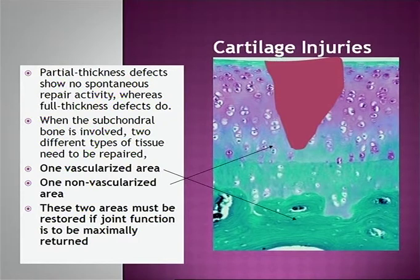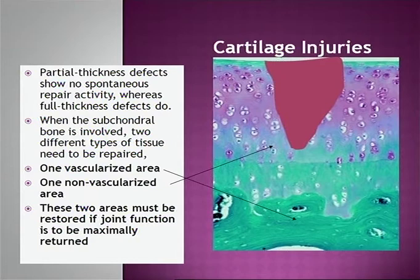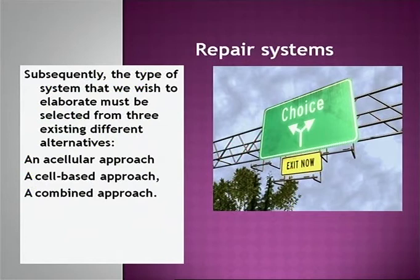Partial thickness defects show no spontaneous repair activity, whereas full thickness defects do. When the subchondral bone is involved, two different types of tissue need to be repaired: one is the vascularized area, and one is the non-vascularized area. Both areas must be restored if you want joint function to be maximally returned.